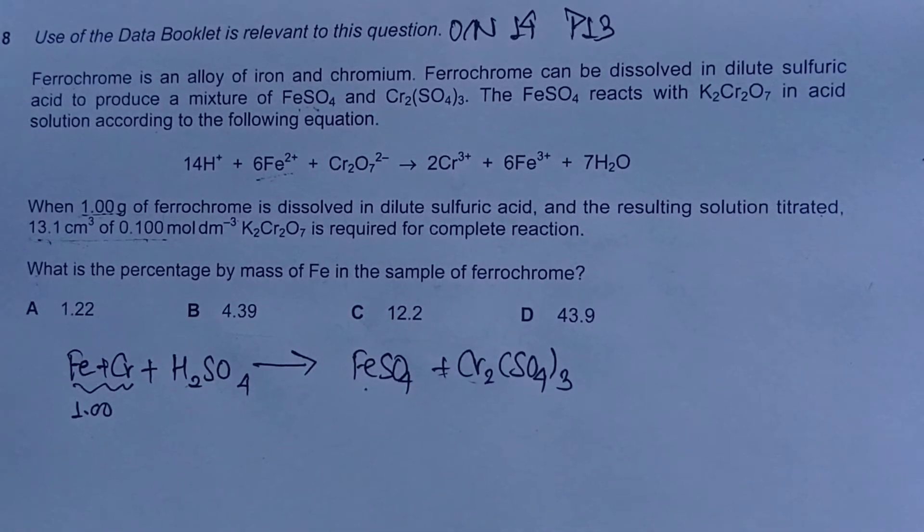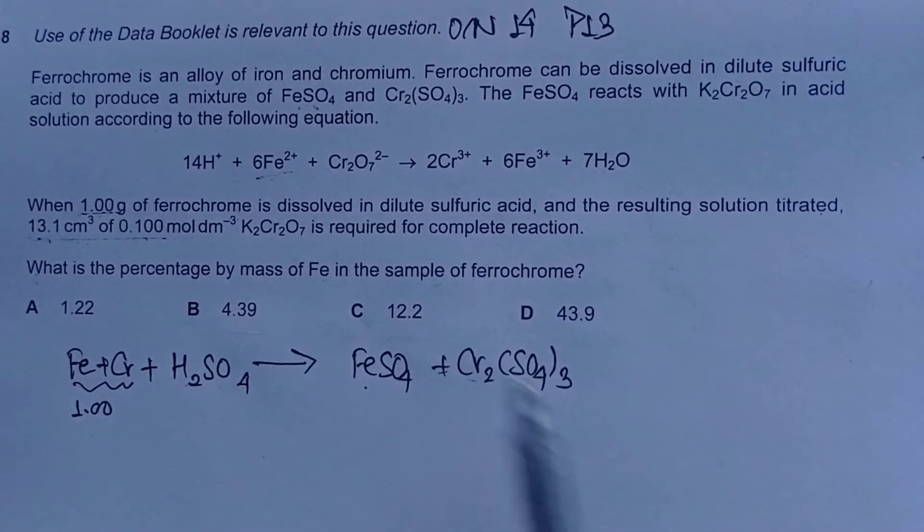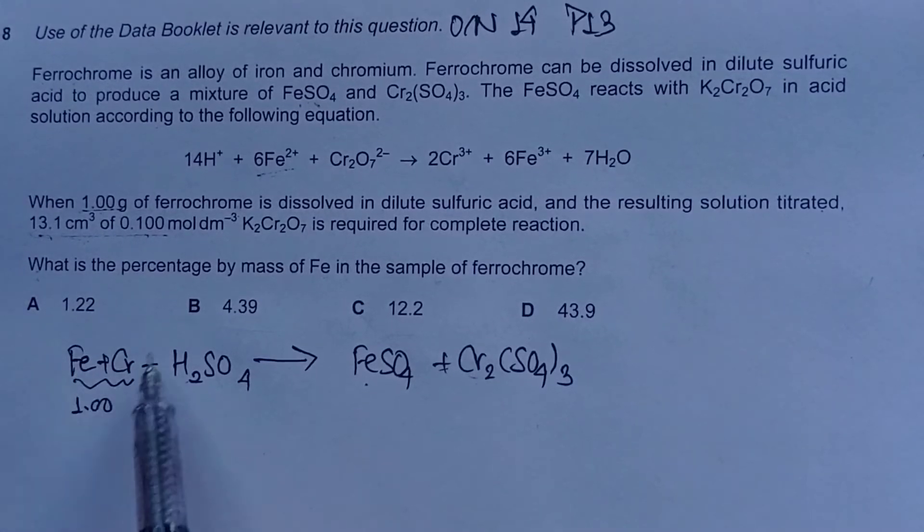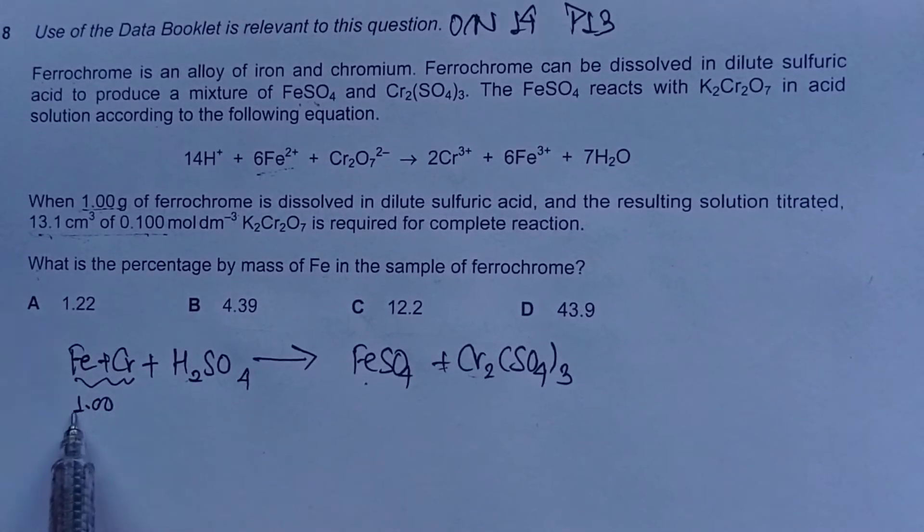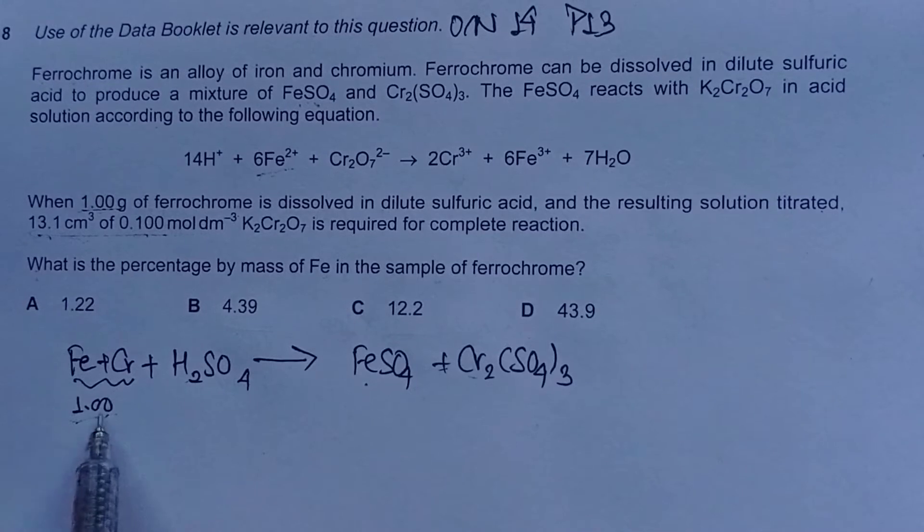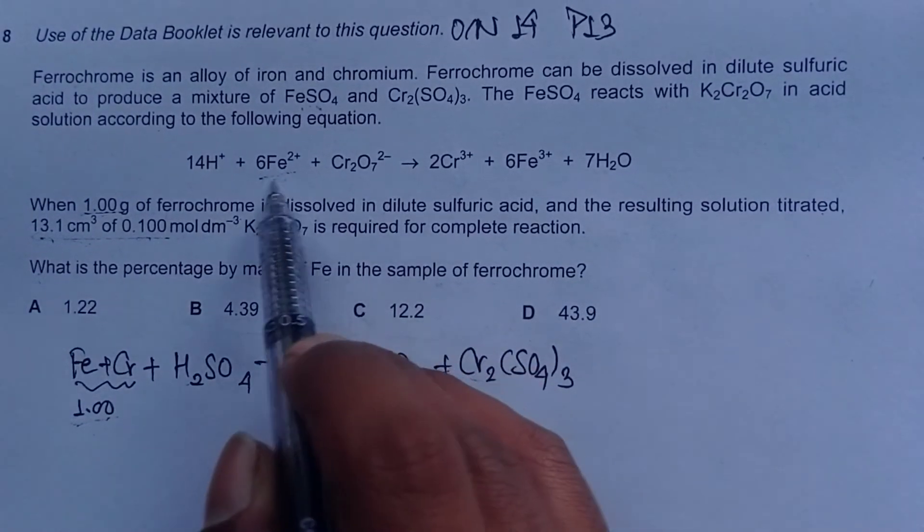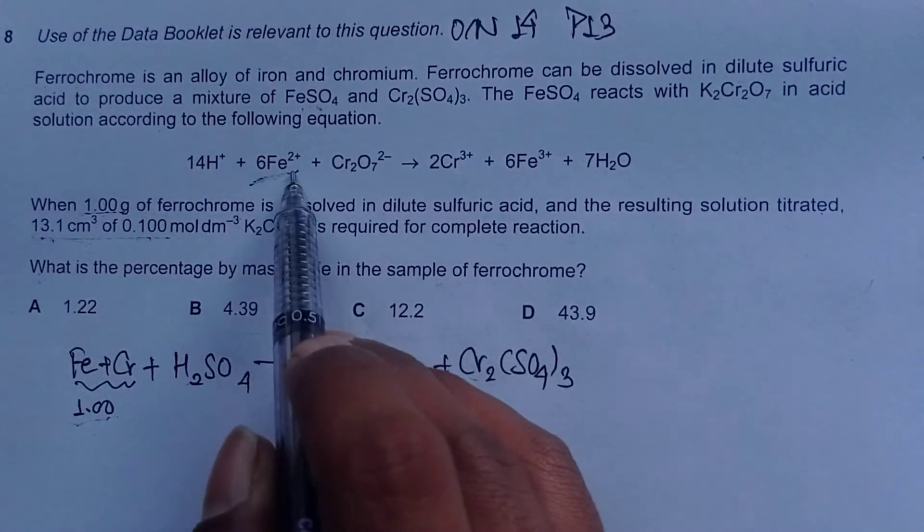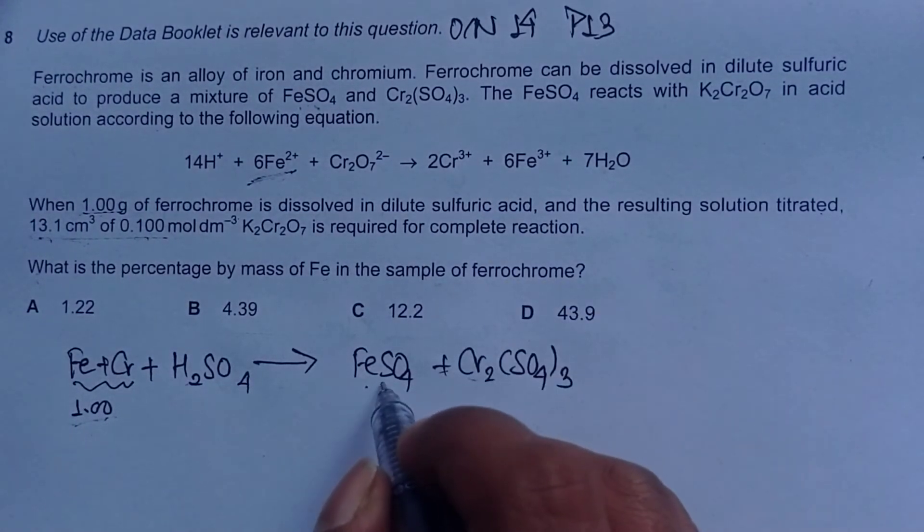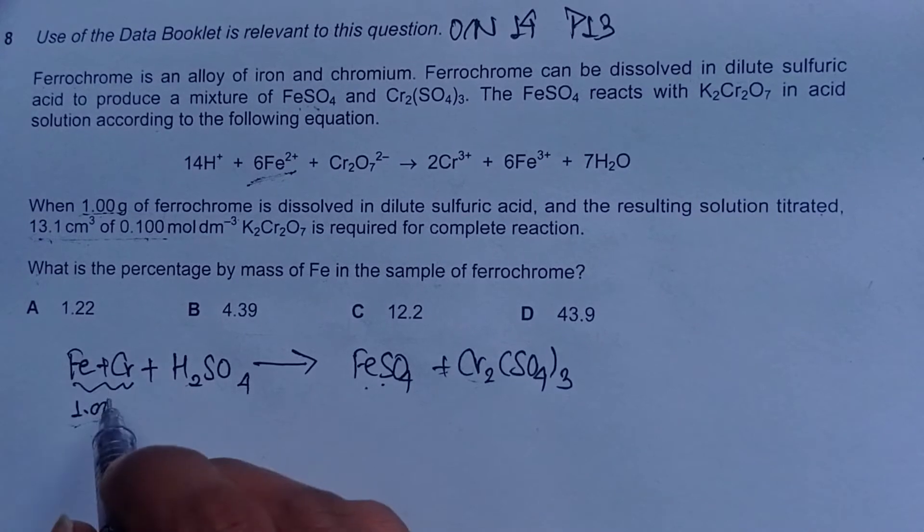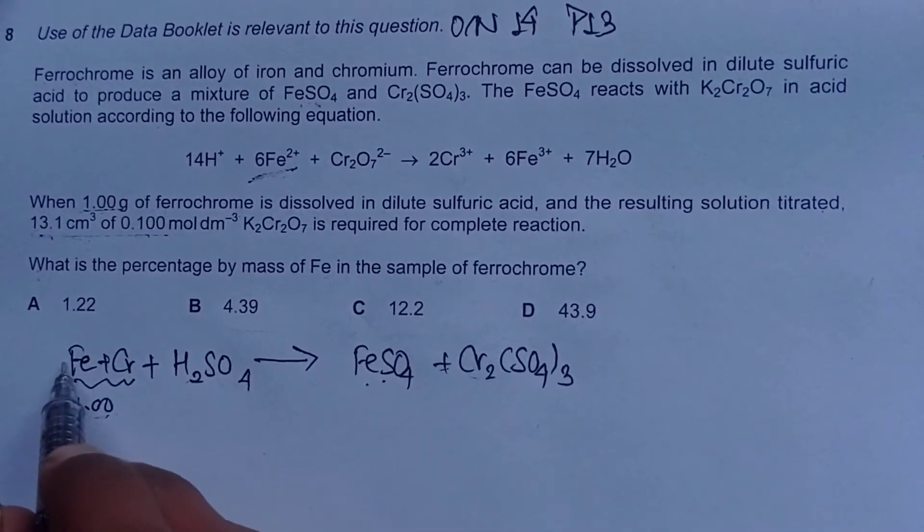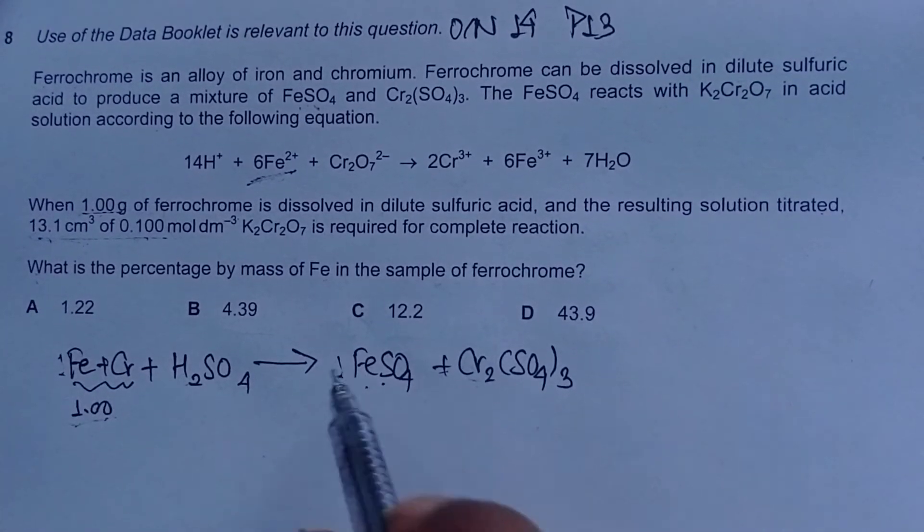To calculate percentage by mass of Fe, we have to first find the mass of iron, then divide by the total mass of ferrochrome, which is one gram, and multiply by 100. To find the mass of Fe, we can first calculate the moles of Fe²⁺, and moles of Fe²⁺ and moles of ferrochrome are the same because we have one on both sides.